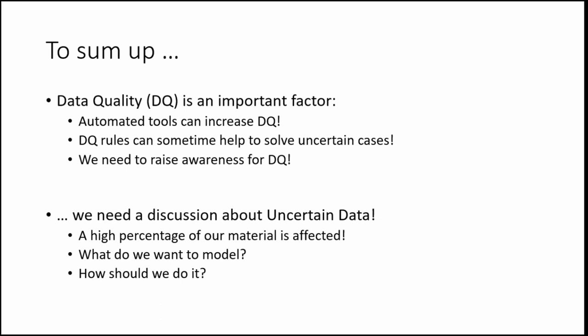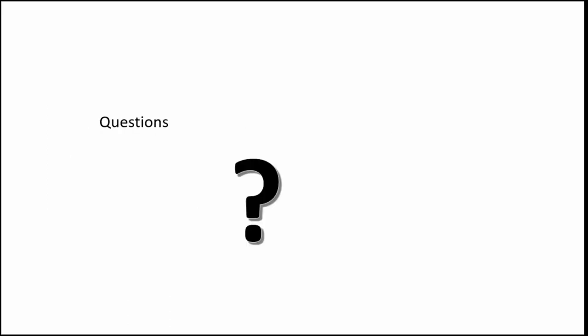The tools are starting to flag up a certain amount of uncertainty, which gives us a good chance to work out how to solve it using tools. It's very important that we raise awareness for data quality. We also need to have a discussion about what we mean by uncertain data — as you can see in some of our examples, a high percentage of our material is affected by it. We have to know what we want to model and how we want to model it. Thank you very much — and this last slide should have been my opening slide: Carsten's first comment to me was 'never use a question mark.'